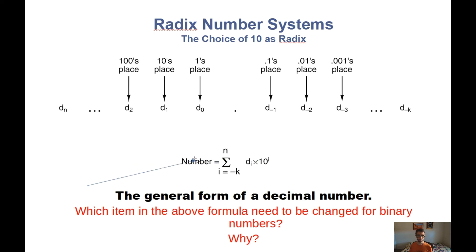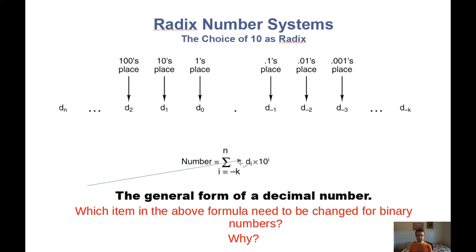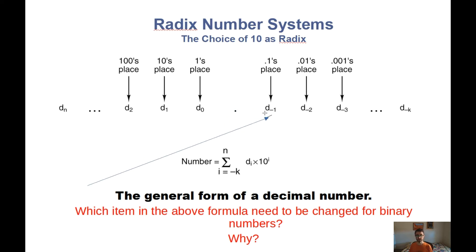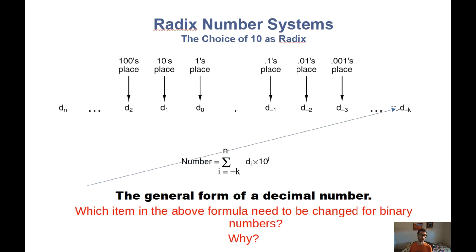In the middle of this slide we have the mathematical representation of a radix number system. The epsilon — the Greek letter that looks like a capital E — can be intimidating, but all it means is that you're adding up a series of values. To the right of the epsilon is d sub i times 10 to the i. d sub i stands for the digit in position i. Starting in the middle and going left, we have d sub 0, d sub 1, d sub 2, up to d sub n. And on the right we have d sub negative 1, d sub negative 2, d sub negative 3, all the way to d sub negative k.